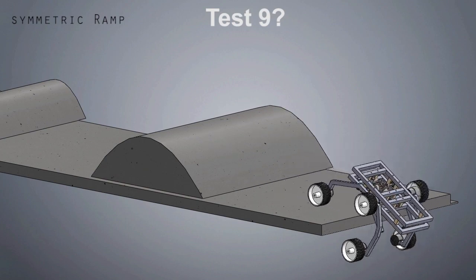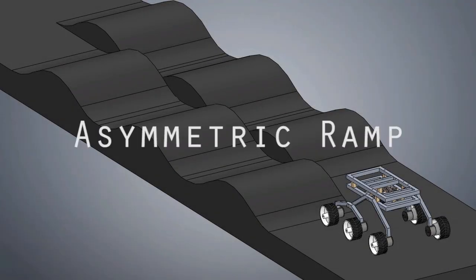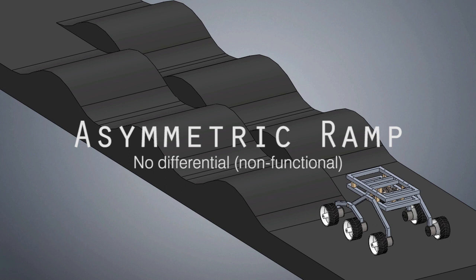Now for some of you guys out there, there might come this question: why do we need a complex set of gears on the rover, which is the counter-rotating differential, and how does it affect the performance of the rover? So to answer the question, let's compare the scenarios. In the first situation, we've got an asymmetric ramp.